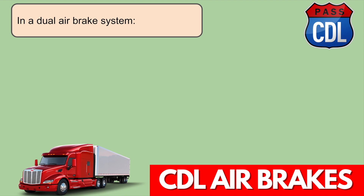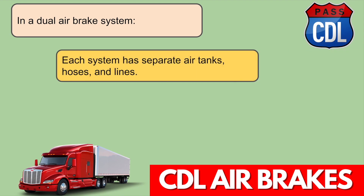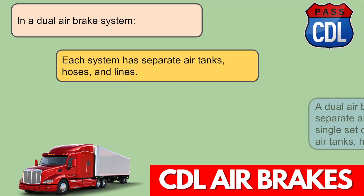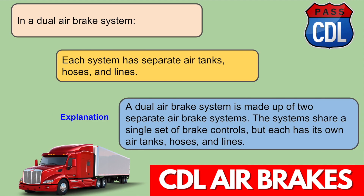In a dual air brake system, each system has separate air tanks, hoses, and lines. A dual air brake system is made up of two separate air brake systems. The systems share a single set of brake controls, but each has its own air tanks, hoses, and lines.